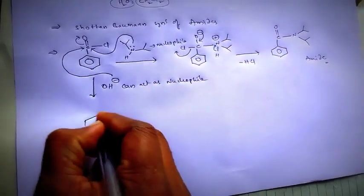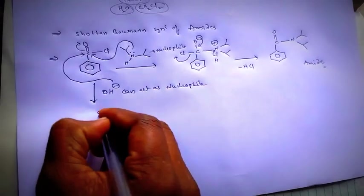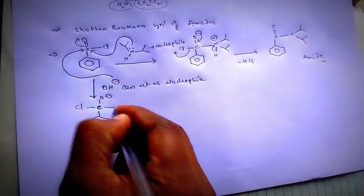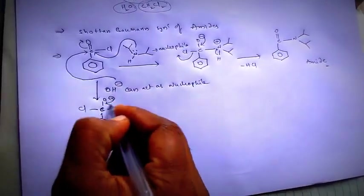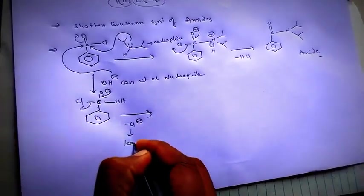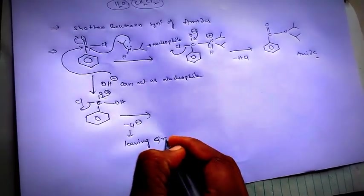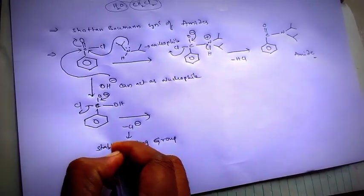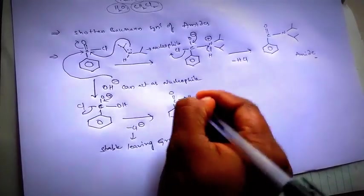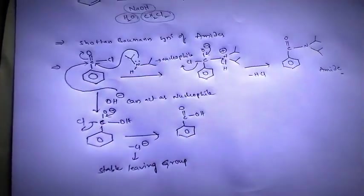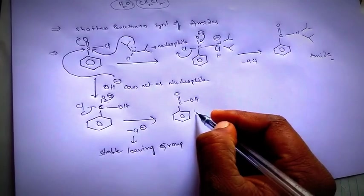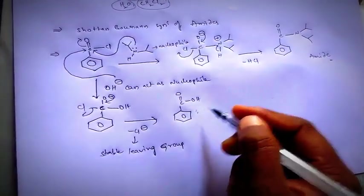And then there is the chance to form, with the leaving of Cl minus, a stable leaving group, carboxylic acid, aromatic carboxylic acid. So why is this not the product in this reaction? Why is this the product?